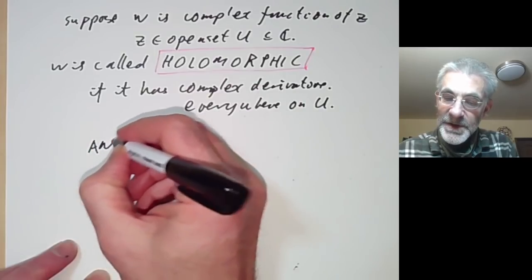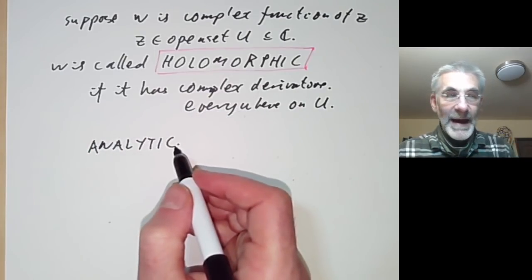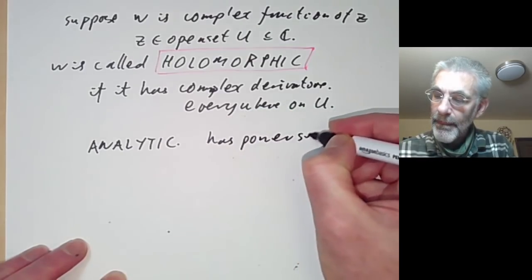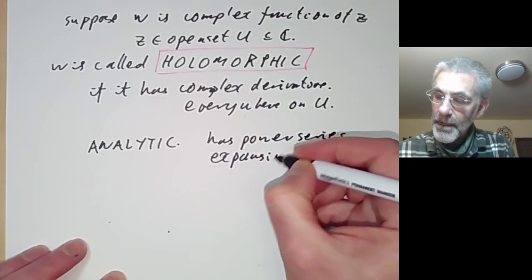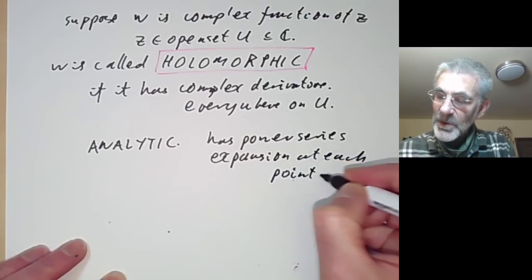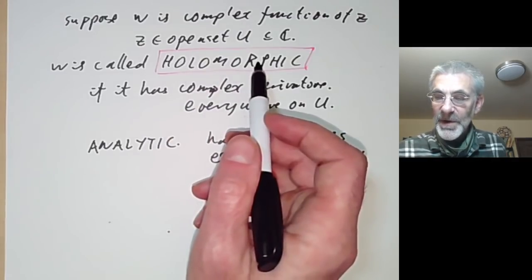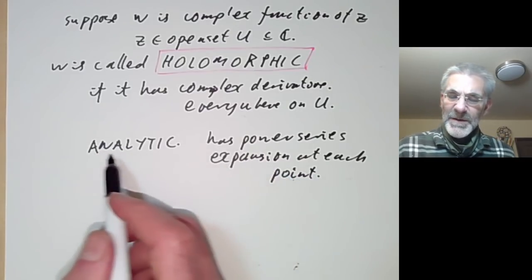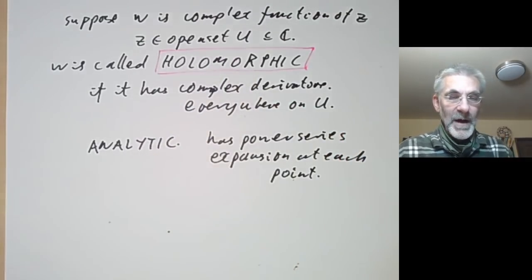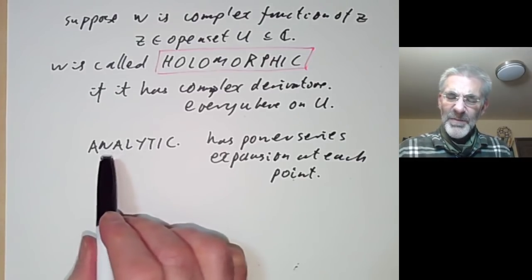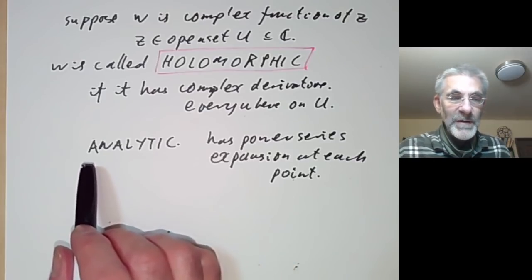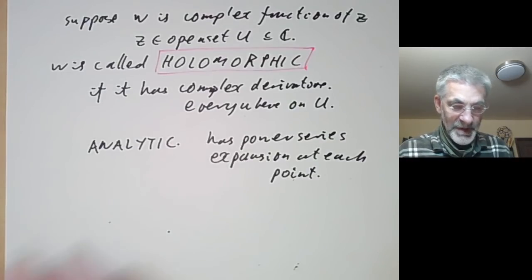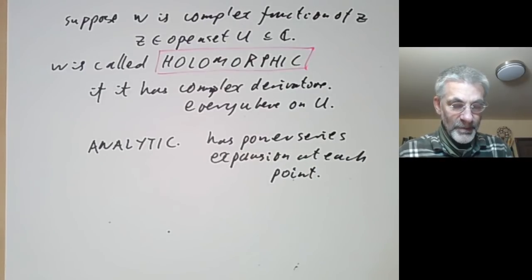You'll sometimes see the word analytic used instead. Strictly speaking, analytic has a slightly different meaning — it means the function has a power series expansion at each point. What we will prove later is that for complex functions they're holomorphic on an open region if and only if they have a convergent power series expansion at every point. So for complex functions holomorphic and analytic are more or less equivalent. Analytic applies to somewhat more general classes of functions — for example, a real function can be called analytic if it has a convergent power series expansion at every point, but you couldn't call it holomorphic.